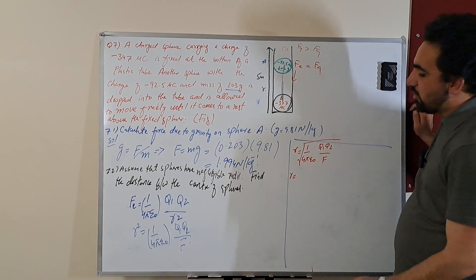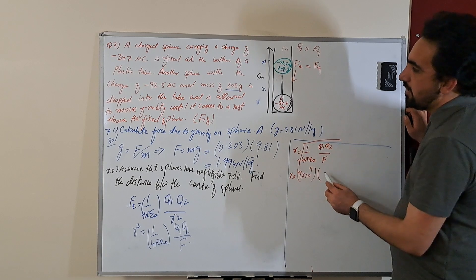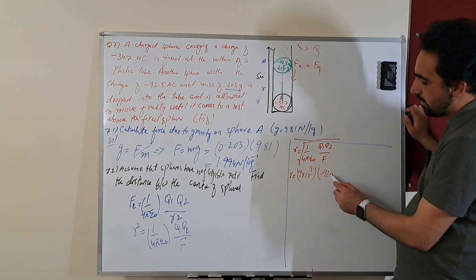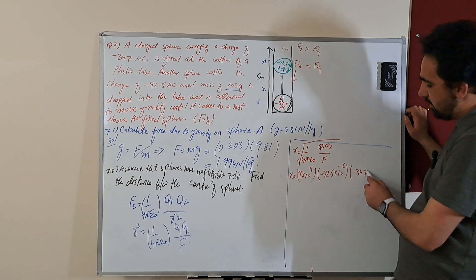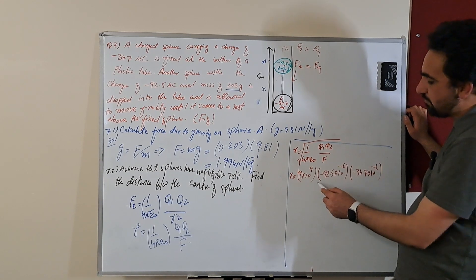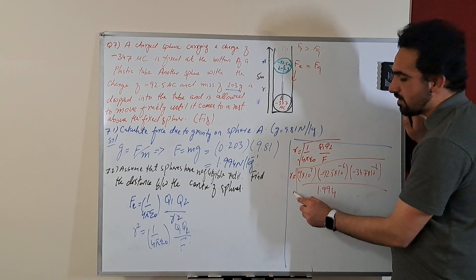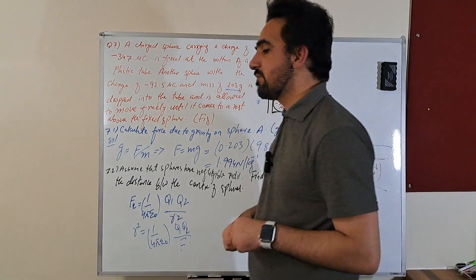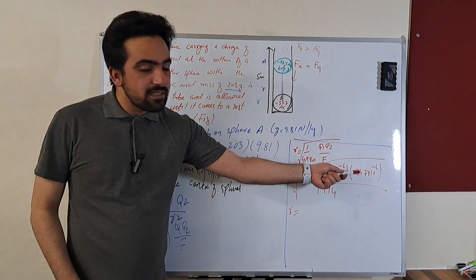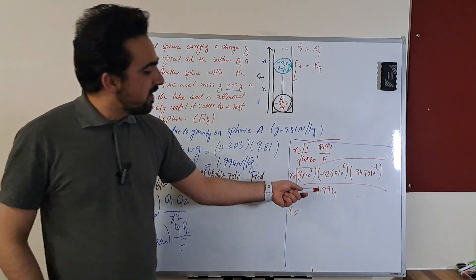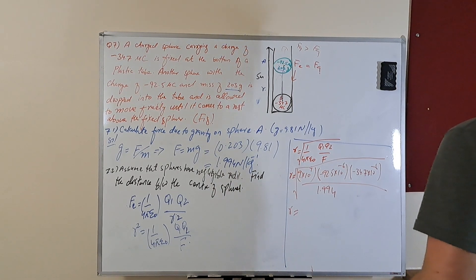Substituting values: one over four pi epsilon naught is 9 times 10 to the power 9, q1 is minus 92.5 times 10 to the minus 6 coulombs, q2 is minus 34.7 times 10 to the minus 6 coulombs, and F is 1.994 Newtons. The two negatives multiply to give a positive value. Divide by 1.994, which is approximately 2, then handle the powers of ten and take the square root to find R.